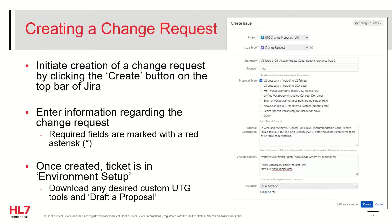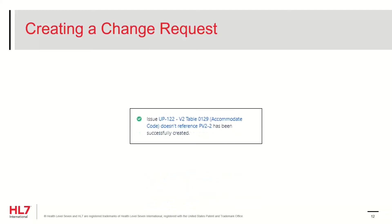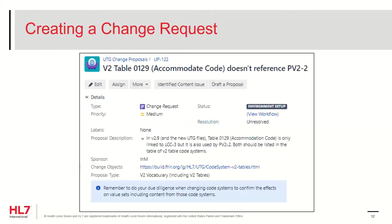The assignee will be you as the person who entered the change request. In the case where you are creating a starter ticket for someone else, select the person who will be designing the vocabulary changes to be submitted with the proposal. Once all of the required fields have been entered and you are satisfied with the information provided, click Create to enter the ticket. A pop-up will appear with a link to the new ticket — click it to review the change request.